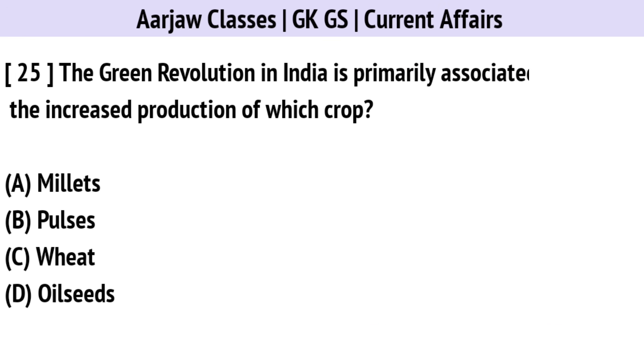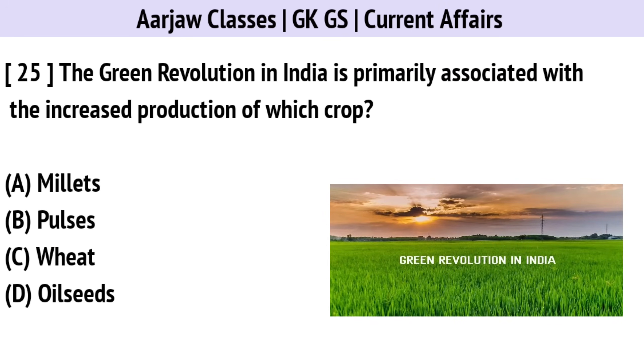The Green Revolution in India is primarily associated with the increased production of which crop? Correct option is C — Wheat.